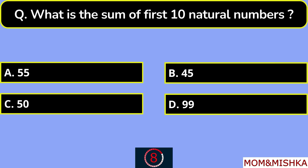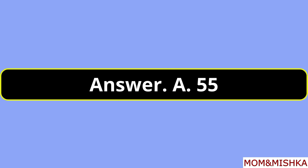What is the sum of the first 10 natural numbers? The answer is 55. Option A.